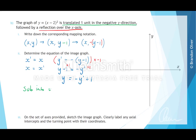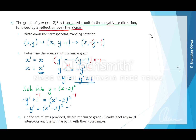We use these results and substitute them into our original graph, which was y equals x minus 2 all squared. Wherever there is a y, we replace it with this expression. So we get negative y-dash plus 1 equals x-dash minus 2 all squared — wherever there is an x, we replace it with x-dash. Then to get y by itself, we subtract 1 from both sides, giving negative y-dash equals x-dash minus 2 all squared minus 1.